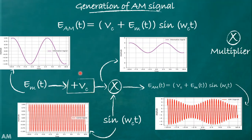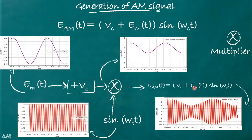To this message signal, a DC value equal to Vc (the peak of the carrier) is added, generating the term [Vc + em(t)]. This term is then multiplied with sin(ωc·t), which is a sinusoidal wave having a peak of one volt at frequency ωc. The multiplication is performed using a device called a multiplier. After multiplication, the equation becomes [Vc + em(t)]·sin(ωc·t), which is the equation of the amplitude modulated wave.